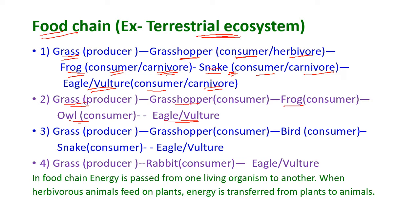The third food chain: grass is eaten by grasshopper, grasshopper is eaten by birds, birds are eaten by snakes, and snakes are eaten by eagle or vultures. The fourth food chain: grass is eaten by rabbit, and rabbits are eaten by eagle or vulture.